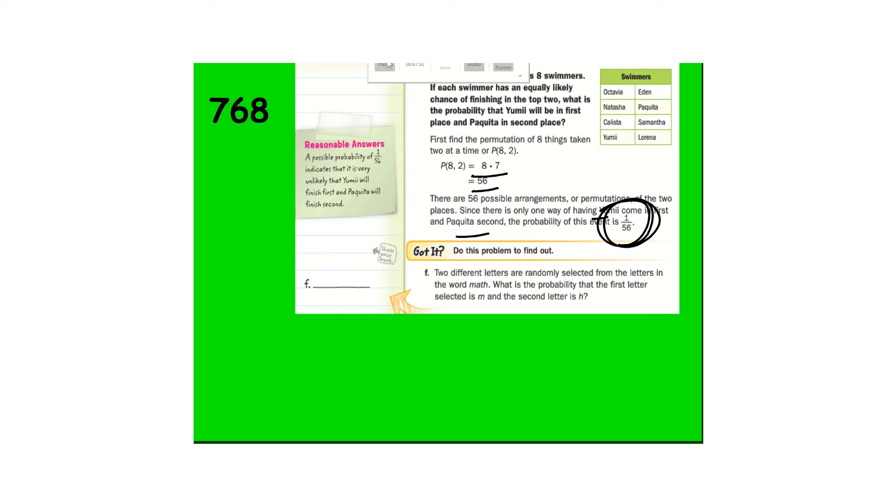All right. Letter F. Two different letters are randomly selected from the letters in the word math. What is the probability that the first letter is the M and the second is the H? Go ahead and pause and do that. First letter, there's four outcomes. Once the M is chosen, there's three outcomes left. So there's 12 outcomes, but it says what's the probability? So that's one out of 12.